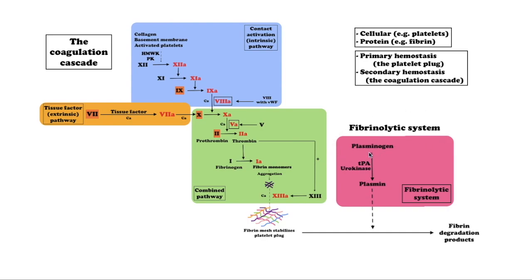Tissue plasminogen activator, or TPA, and urokinase are the agents that convert plasminogen to the active plasmin, thus allowing fibrinolysis to occur. TPA is released into the blood very slowly by the damaged endothelium of the blood vessels, such that after several days when the bleeding has stopped, the clot is broken down. This occurs because plasminogen became entrapped within the clot when it formed, and as it is slowly activated, it breaks down the fibrin mesh.